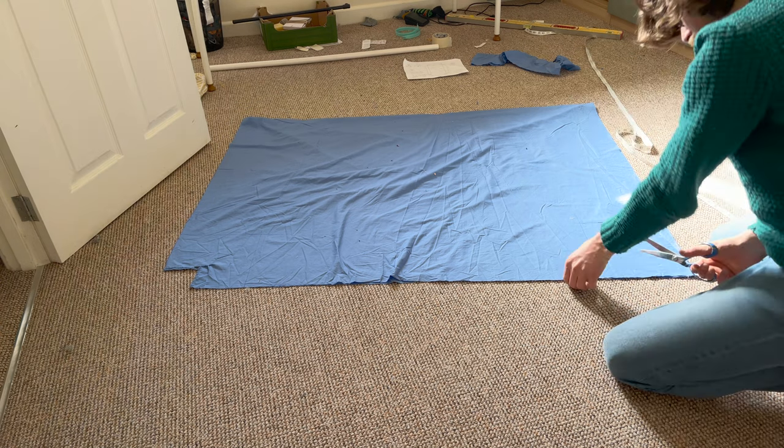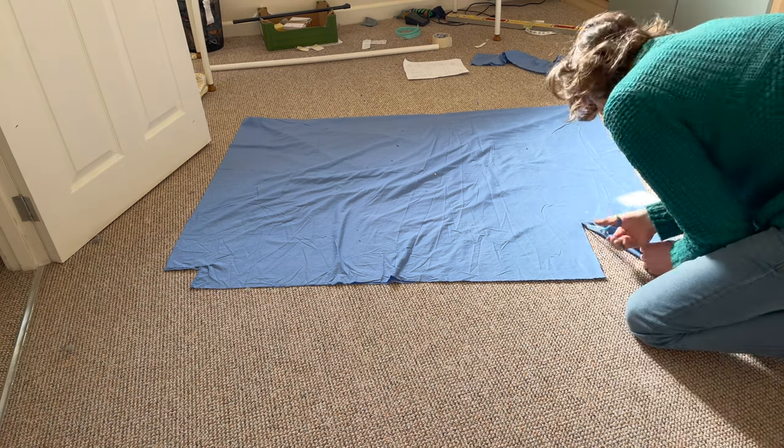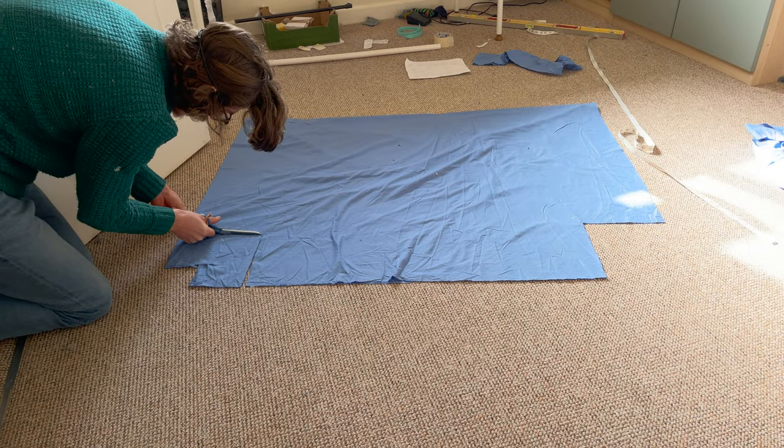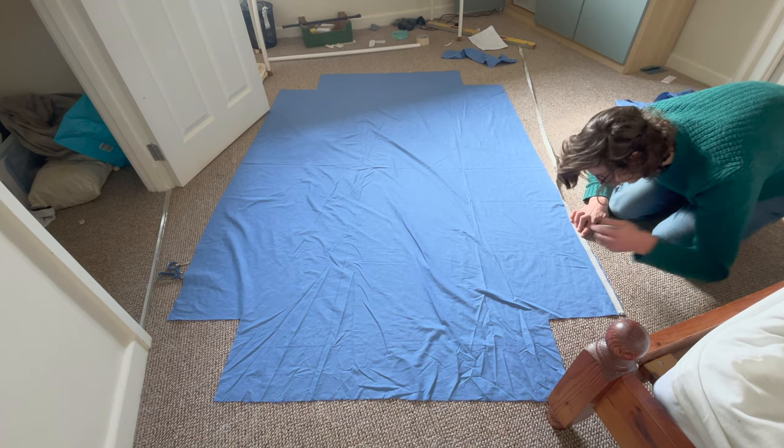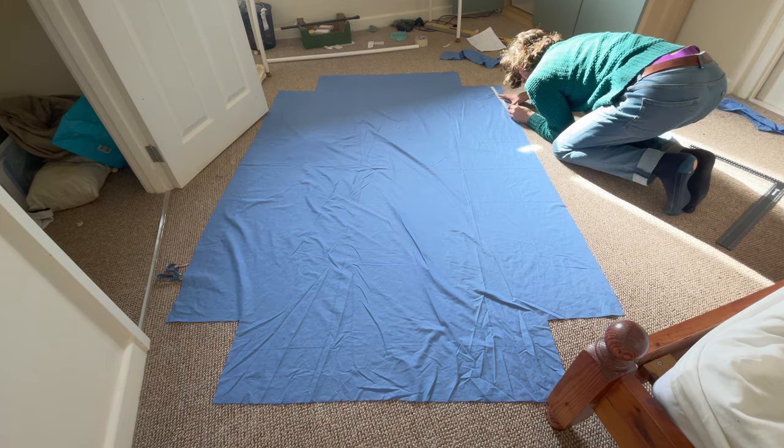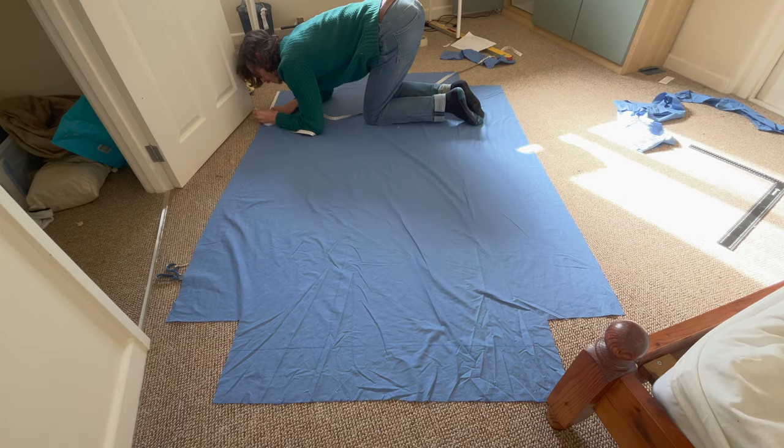It's far easier to cut the corners out of a rectangle than it is to try and draw the pattern directly onto your fabric. Here you can see me marking the start and end points for the elastic. I'd recommend putting it about 35 centimeters from the end of each long edge.